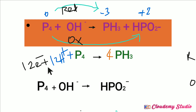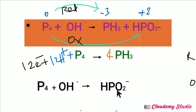Now we balance the oxidation half-reaction. On the left-hand side there are 4 phosphorus atoms, but in hydrogen phosphite ion there is only 1 phosphorus, so we multiply hydrogen phosphite ion by 4 on the right-hand side. When hydrogen phosphite is multiplied by 4, hydrogen becomes 4H on the right-hand side. But the left-hand side has only 1 hydrogen in hydroxide ion, so hydroxide ion needs to be multiplied by 4.